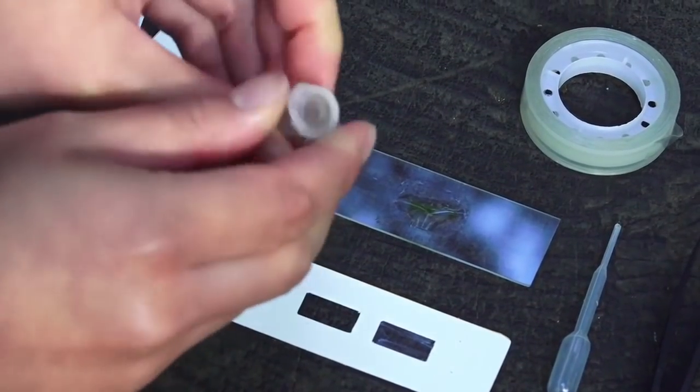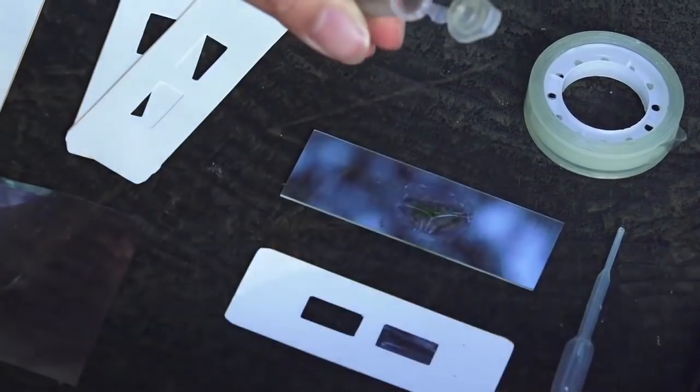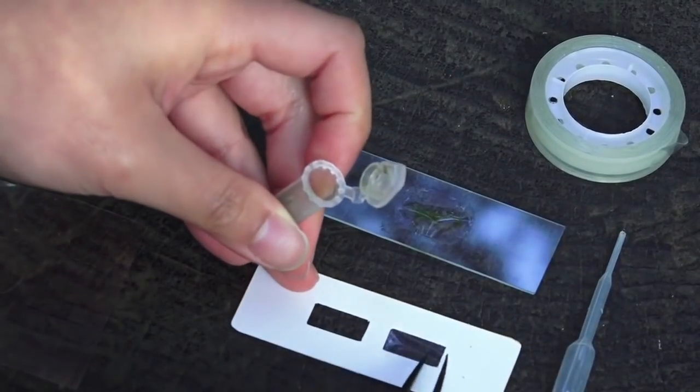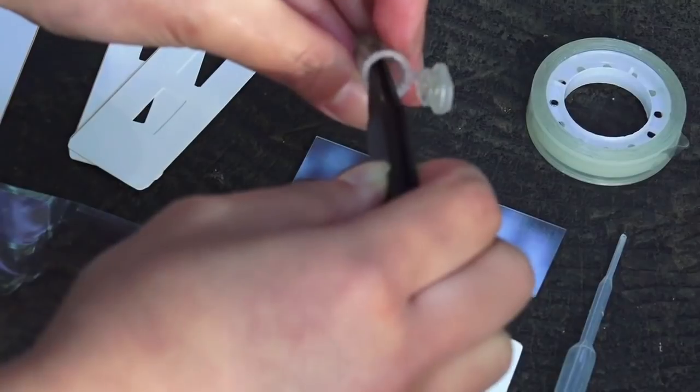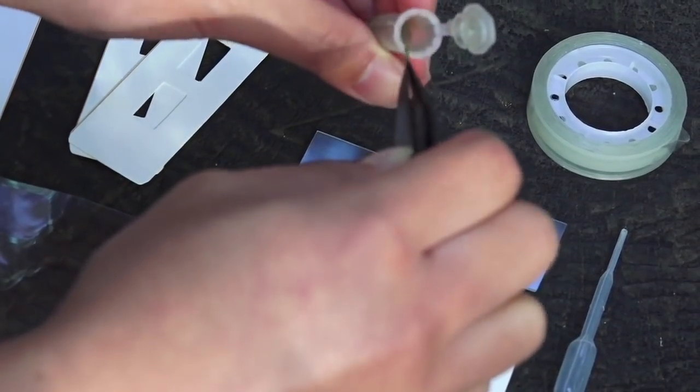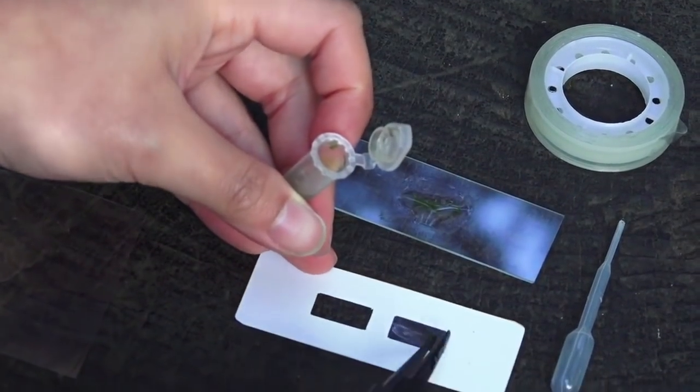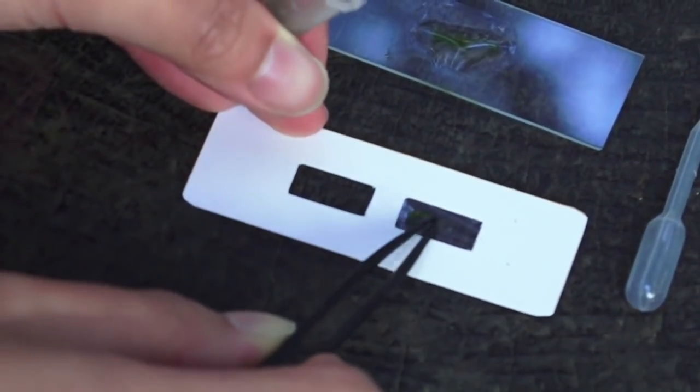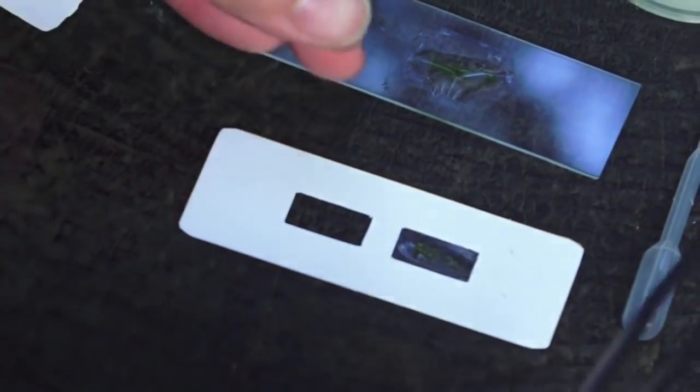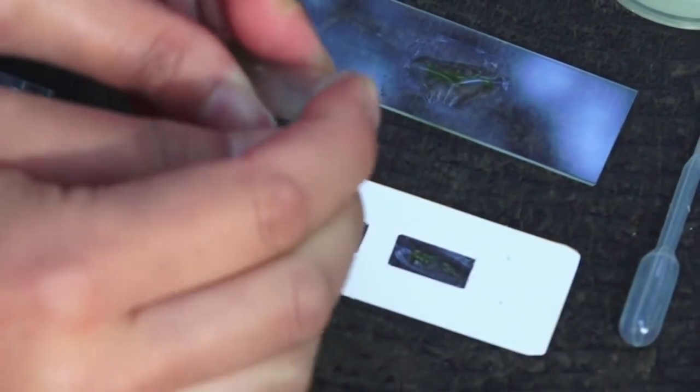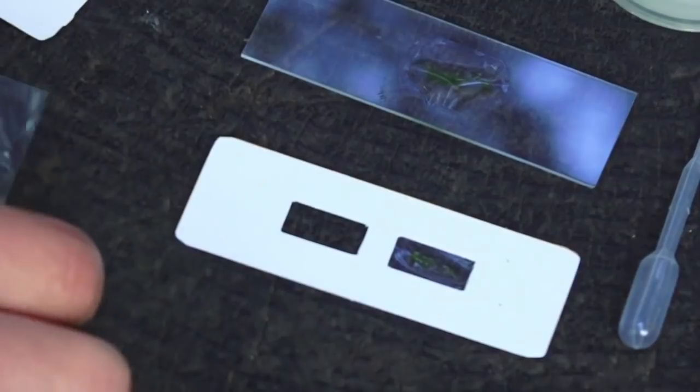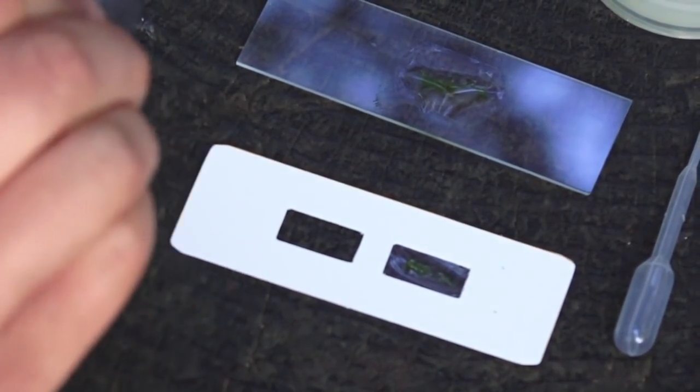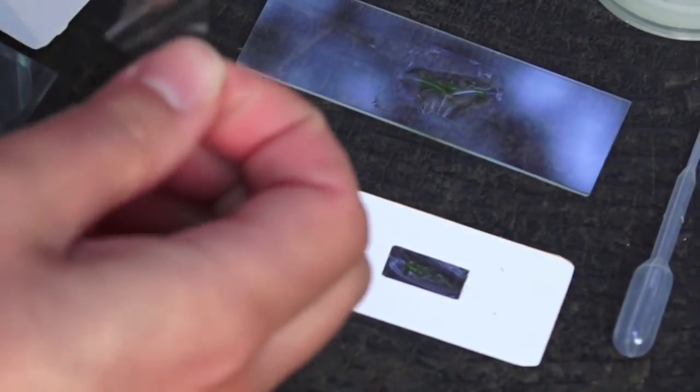Again place some samples that you have and this could be anything from leaves to some pond water sample. Just a tiny bit will give you a magnificent world to explore like that and then put another sticker over so that you're sandwiching your specimen with these stickers.